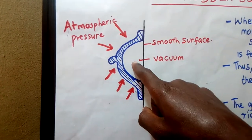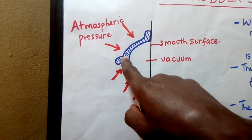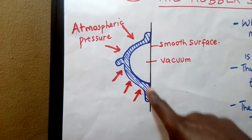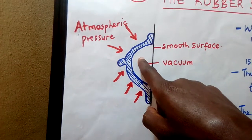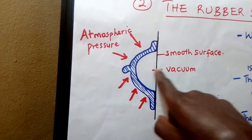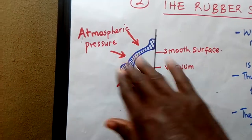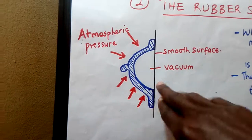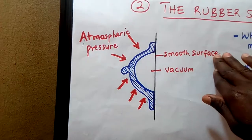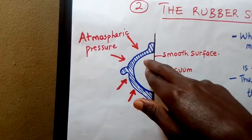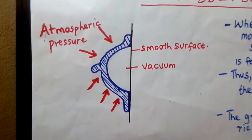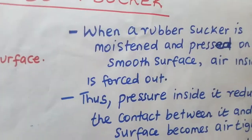When you pressed the rubber sucker against the smooth surface, the air inside went away, so the pressure inside has been reduced — it is essentially a vacuum. Outside, atmospheric pressure keeps pressing. This makes the rubber sucker remain stuck to the surface because the pressure pressing it against the surface is greater than the pressure inside pushing it outward.